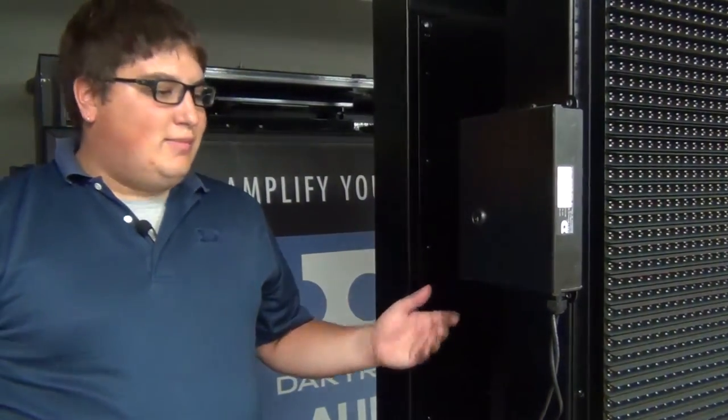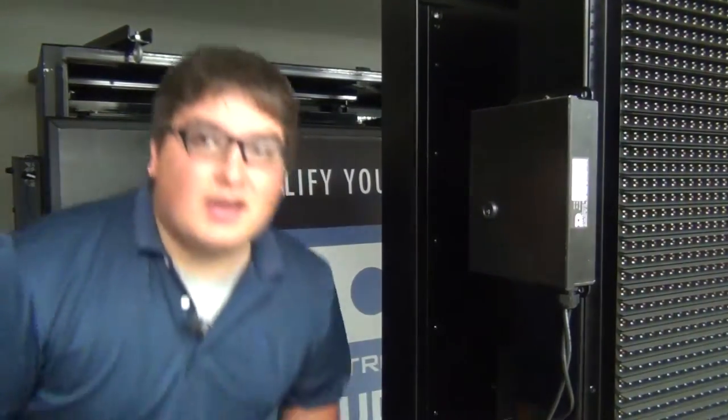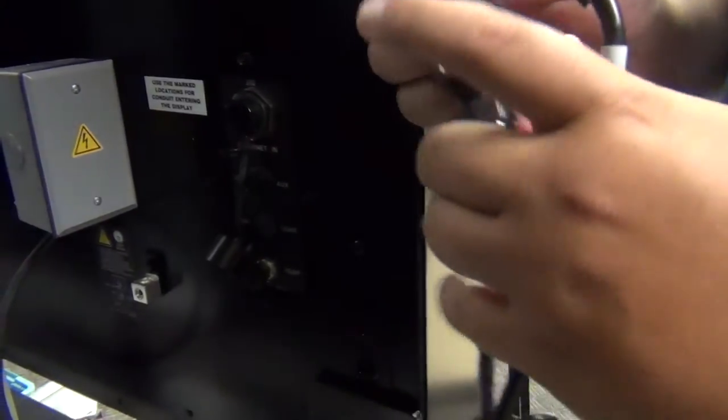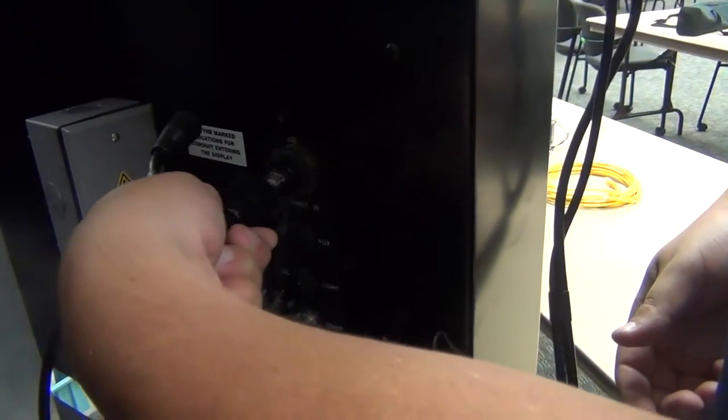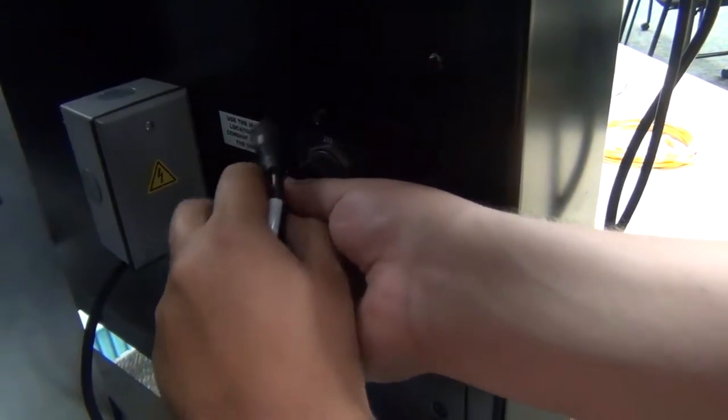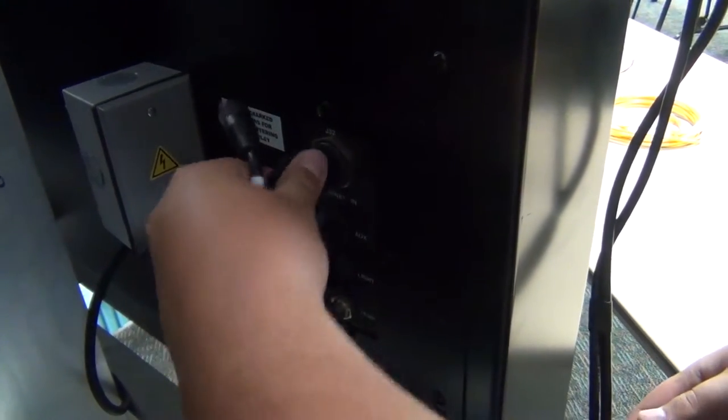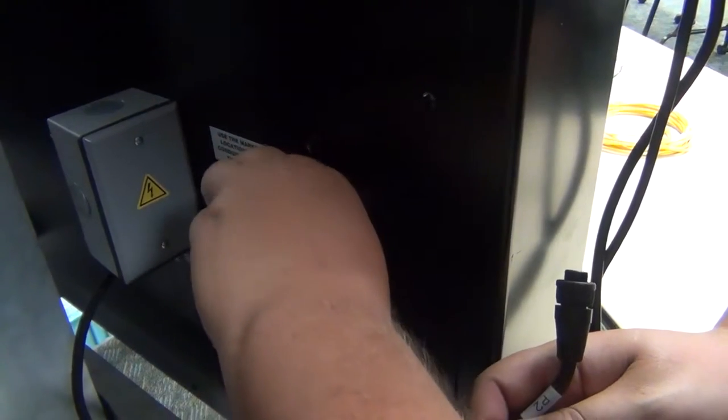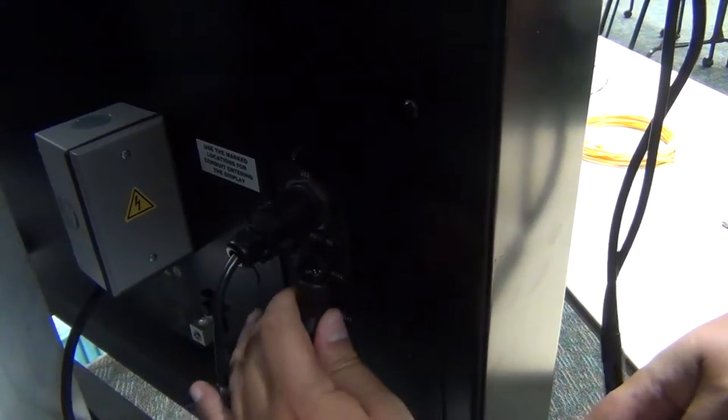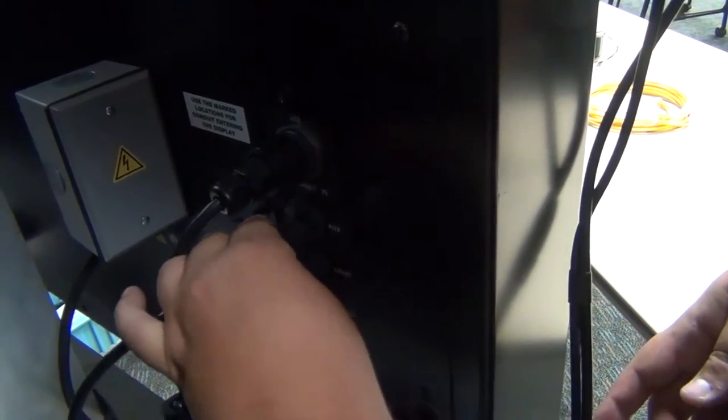Once the comm box is mounted, you'll want to take the ends of the cable and plug them into the back of the display. There are two cables, our Ethernet cable here, we'll plug into the top port. Then we've got our auxiliary power cable that will hook into the port right below it.